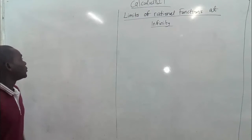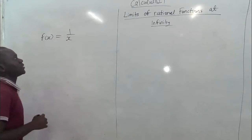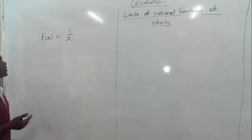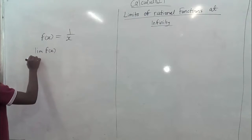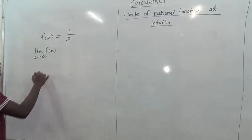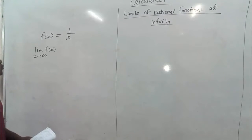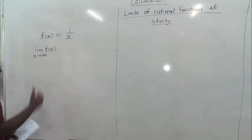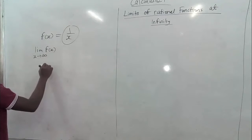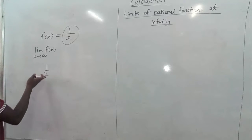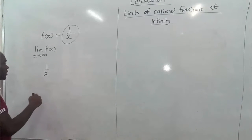Let's start with the parent function. Assuming we have the function f(x) = 1/x — this is the parent rational function — and we want to find the limit of the function as x approaches infinity. Let's use an intuitive approach to find out where the limit gets to as we take x approaching infinity. Let's place some values in place of x and find out what happens as x increases without bounds.